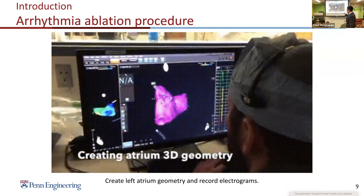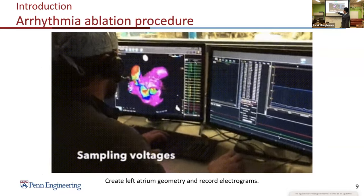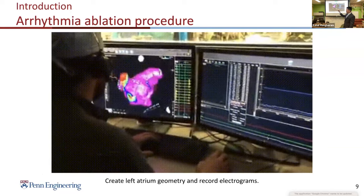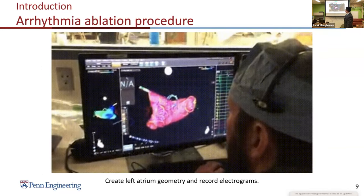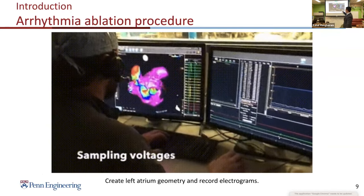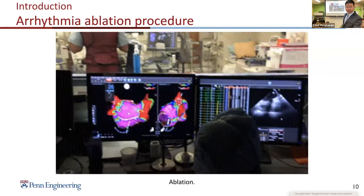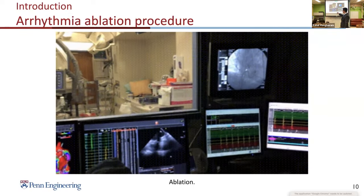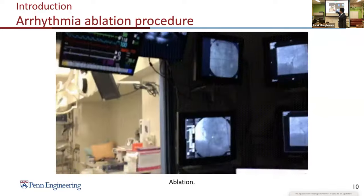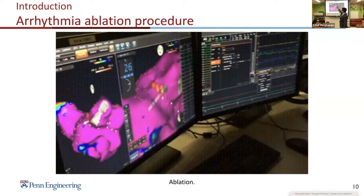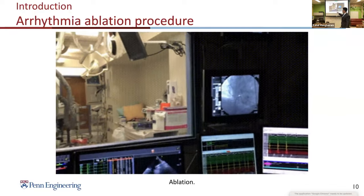This movie shows the beginning of the ablation surgery. The catheters create the left atrium geometry as they move around it, while simultaneously the electrodes record electrograms, which are converted into different maps for diagnosis. Another movie shows the operation room during ablation — the ablation catheter applies radio frequencies to generate heat to kill cells. Behind the glass is where physicians do their work, and at the front, technicians operate the equipment.